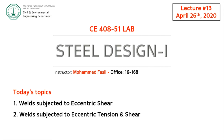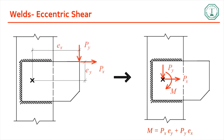When we say there is an eccentric shear, it means that the forces acting on the connection do not pass through the centroid of the connection. So if you have a welded connection in this form with the centroid here, you can see there are two forces acting: Px and Py. Px is located at an eccentricity of ey and Py is located at an eccentricity of ex from the centroid.